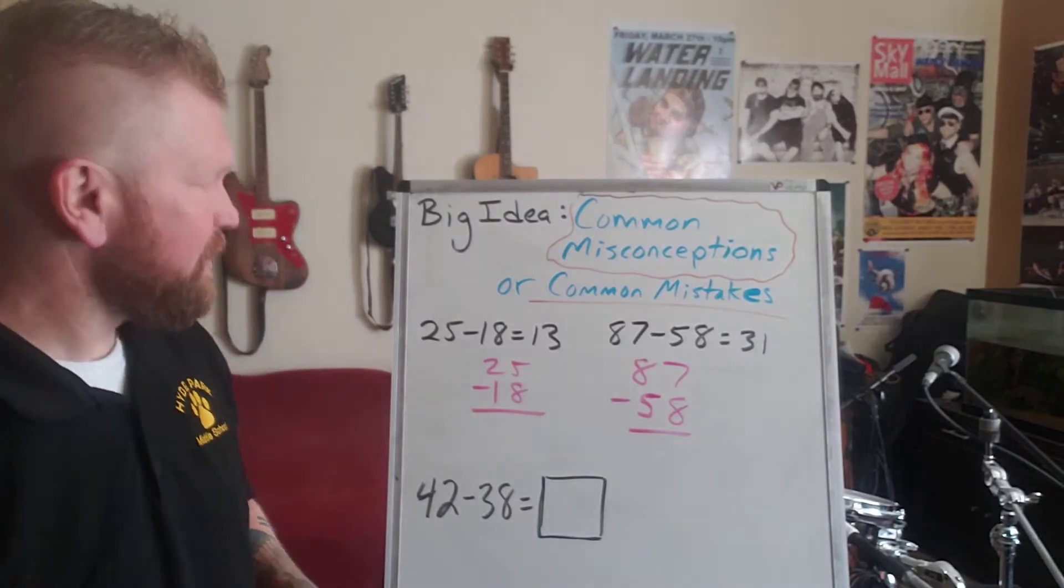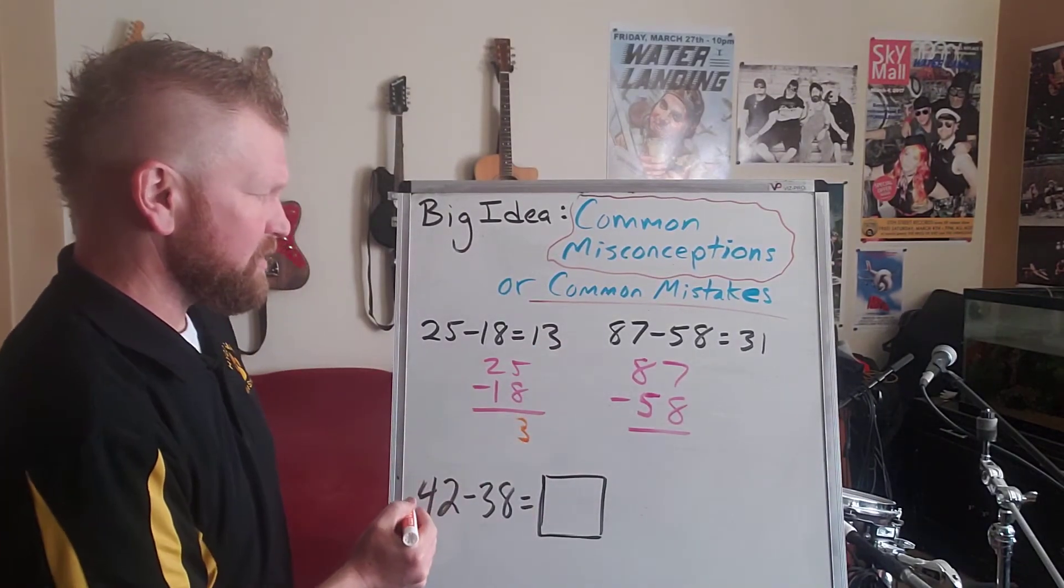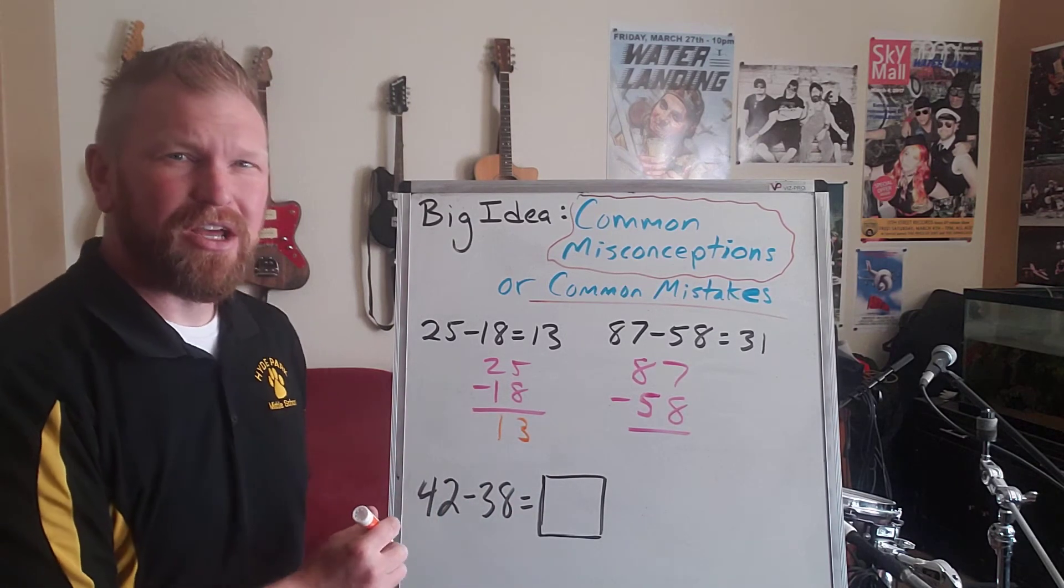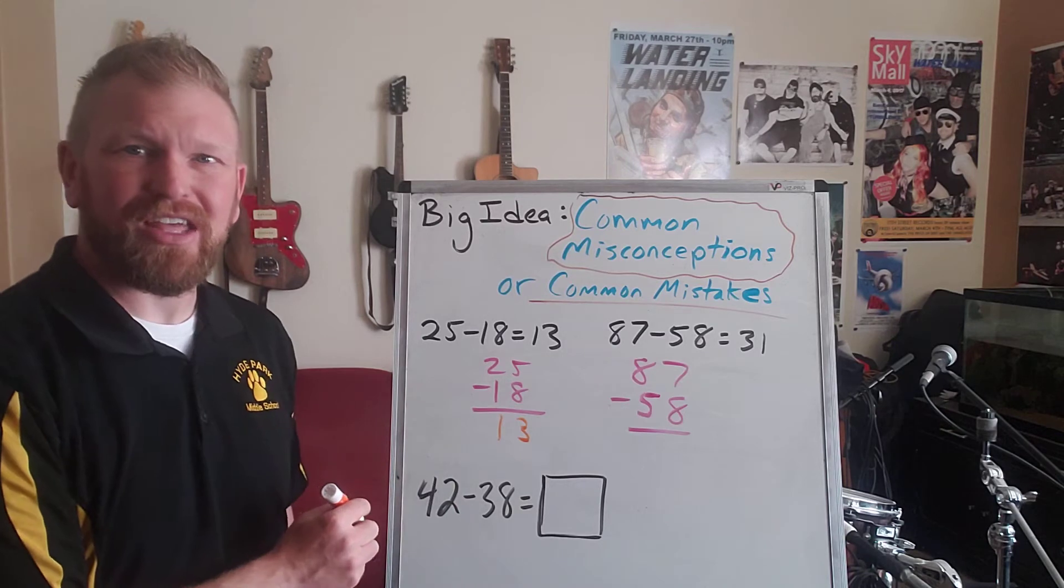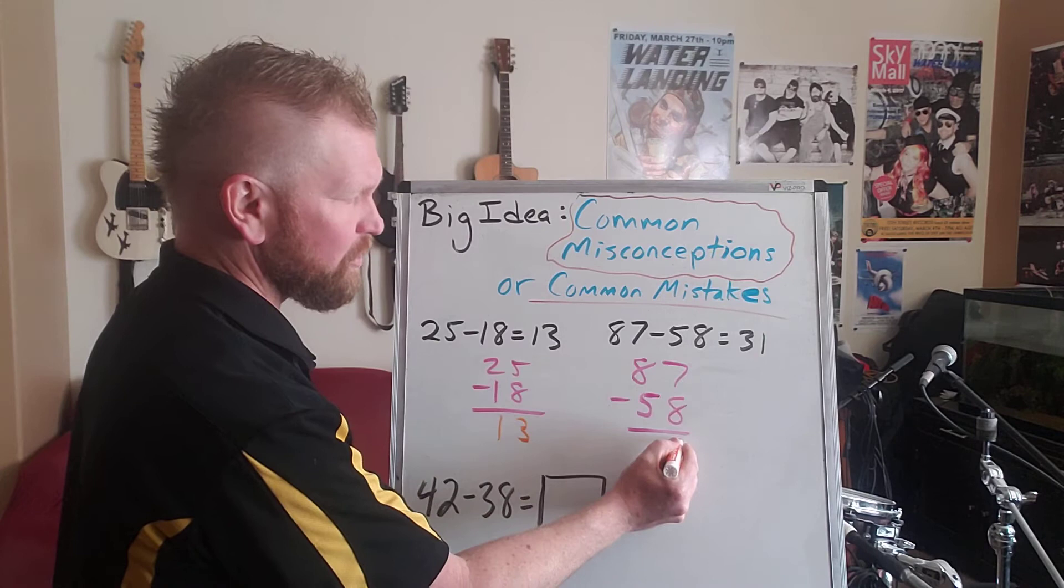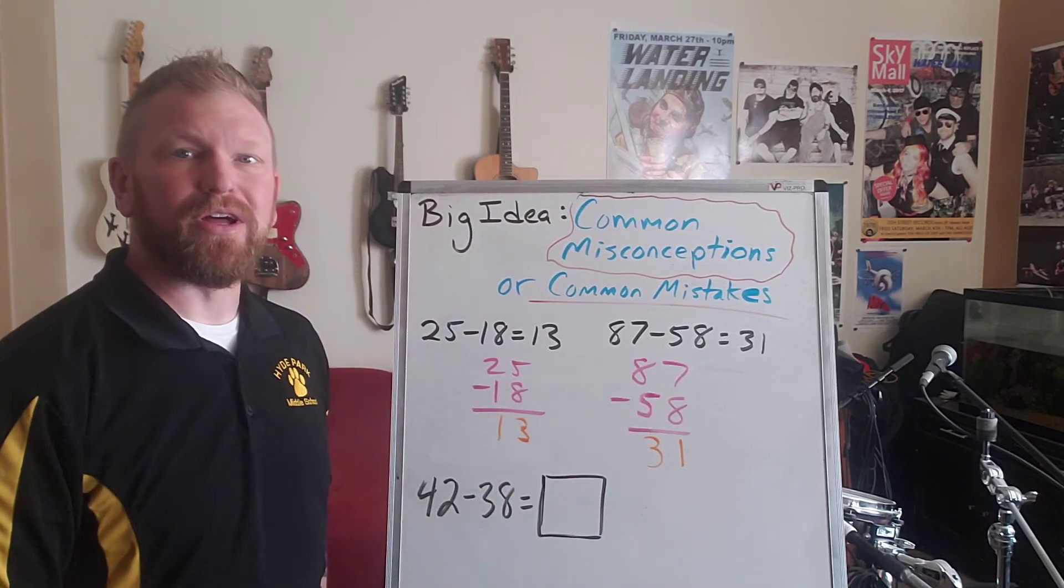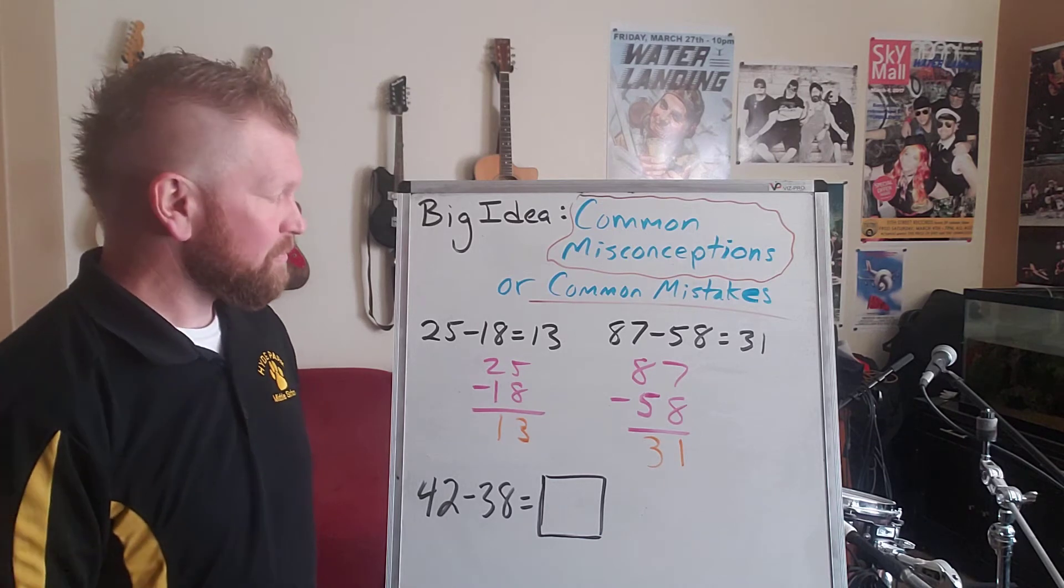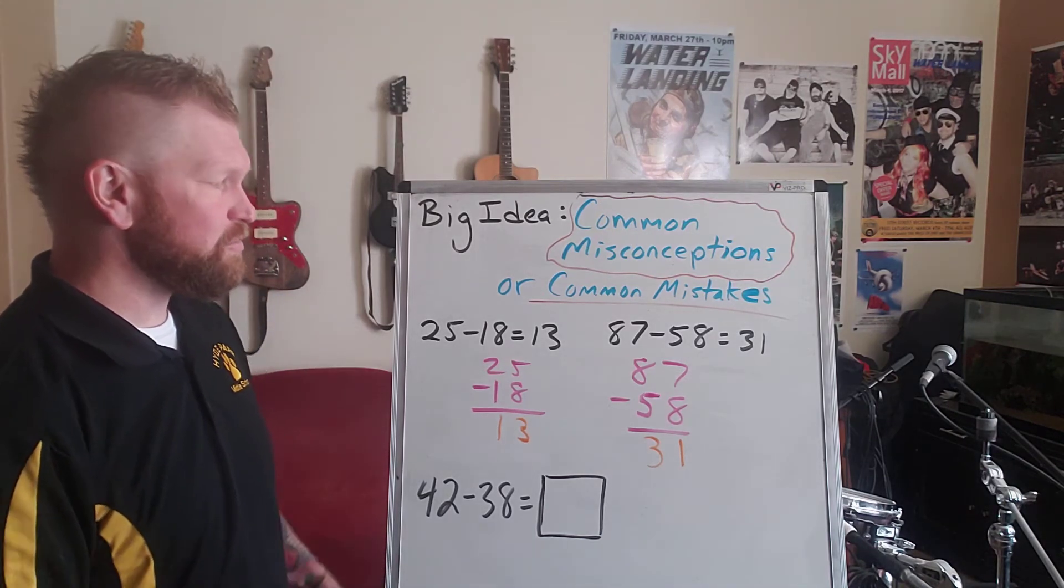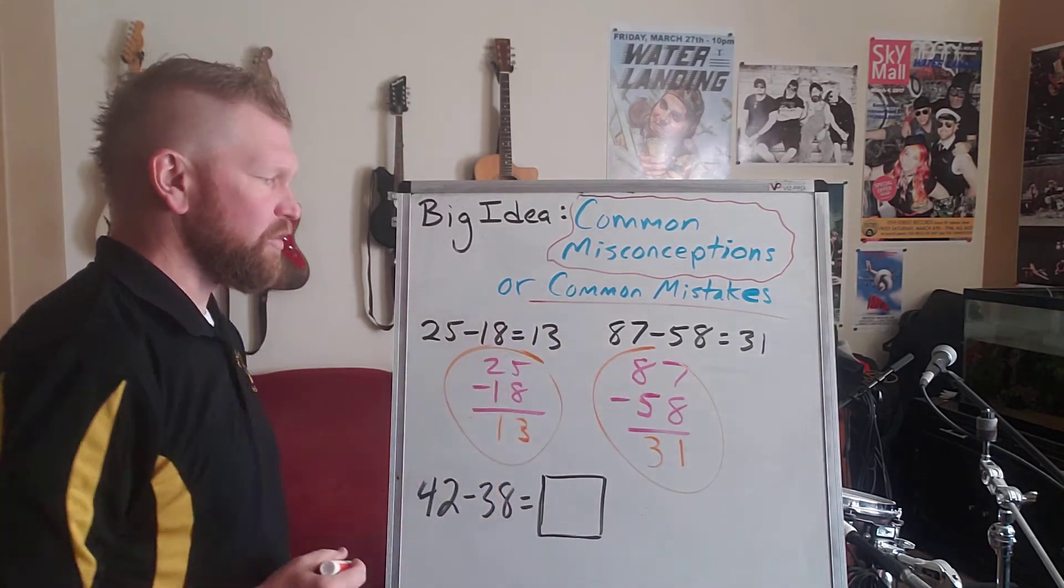All right, so can you see how this student maybe got a three in the ones place and a one in the tens place? Which again is not the right answer, but can you see how they would think that that's the answer, how they got that answer? Can you see how the same student in the ones place would get a one here and get a three here thinking the answer's 31? I think it's a lot more obvious when you look at it written this way than when it's written the horizontal way.